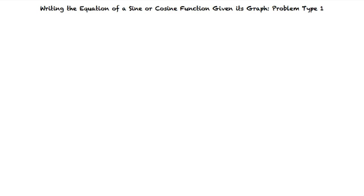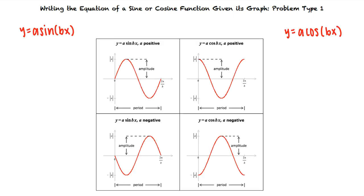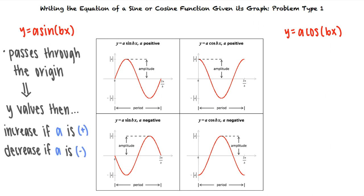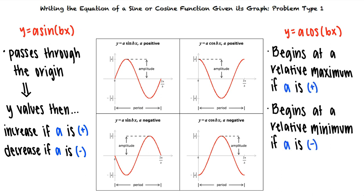Here are the general graphs for the equations y equals a sine bx and y equals a cosine bx, where b is greater than 0. General sine graphs begin with an x-intercept at the origin, an increase if a is positive, or decrease if a is negative. General cosine graphs begin at a relative maximum if a is positive, or begin at a relative minimum if a is negative. The amplitude of the given graph is given by the absolute value of a, and the period of the graph is given by 2 pi over b.